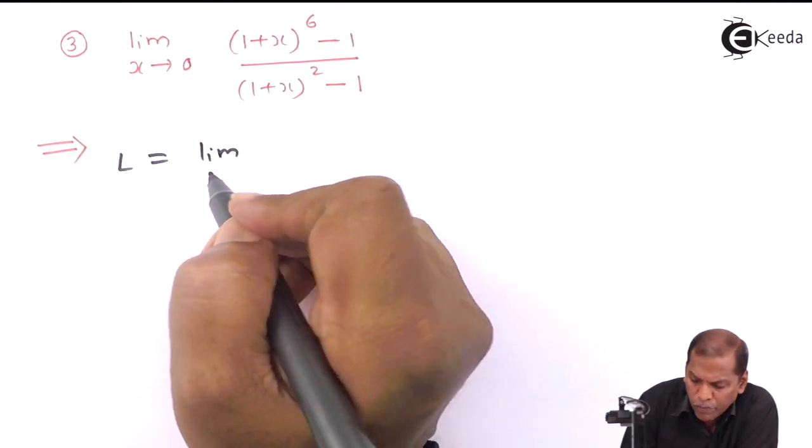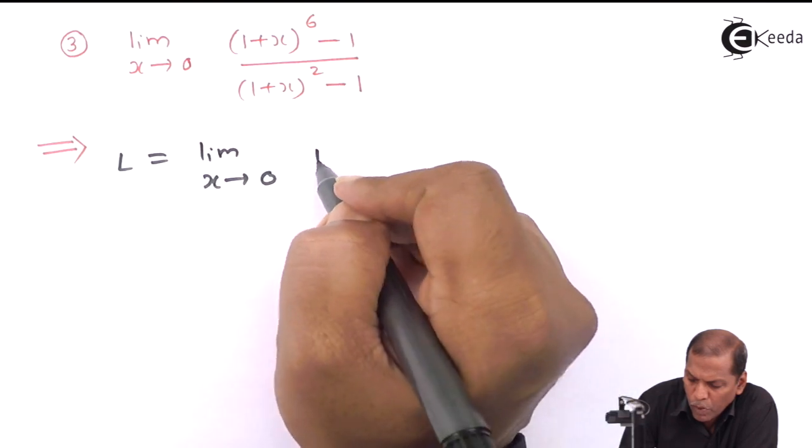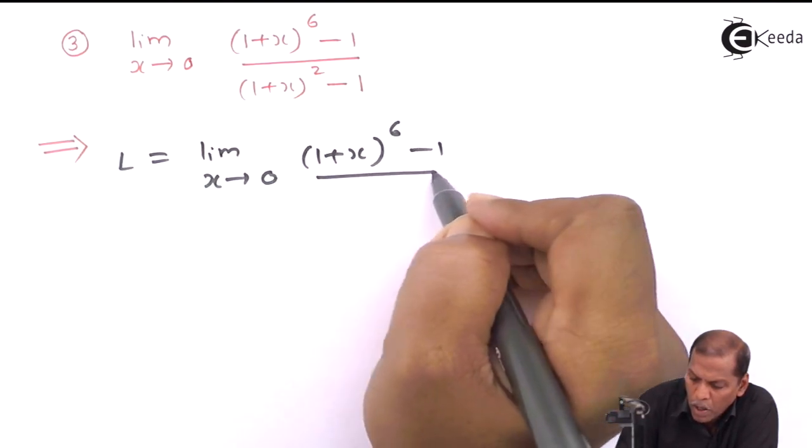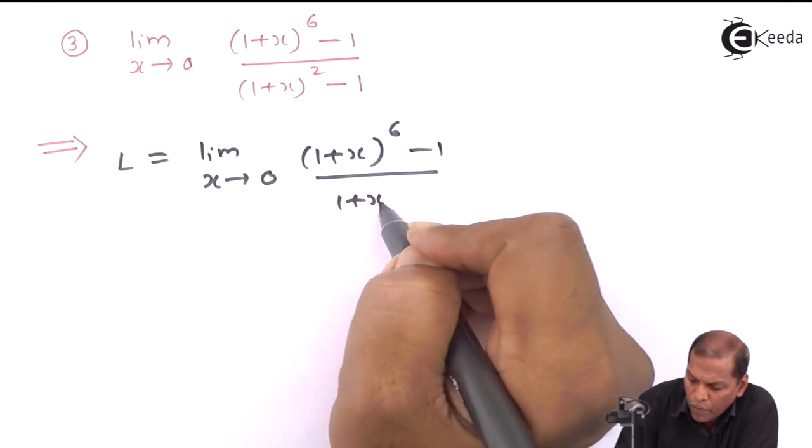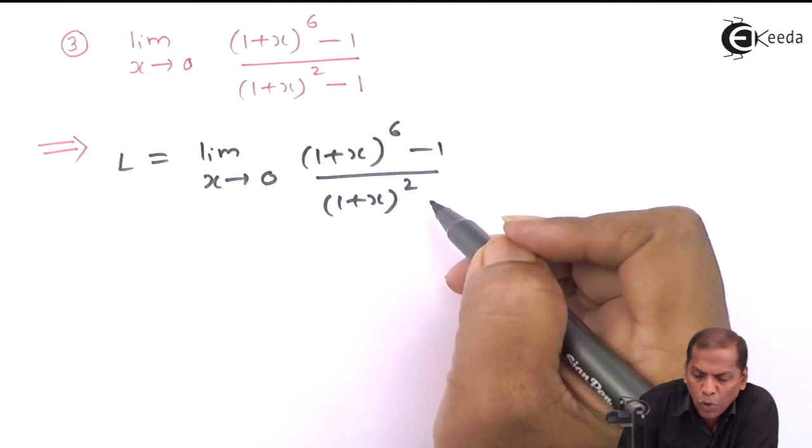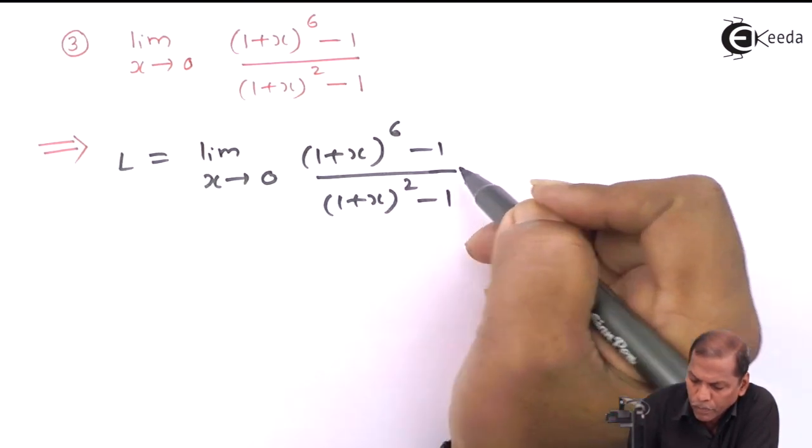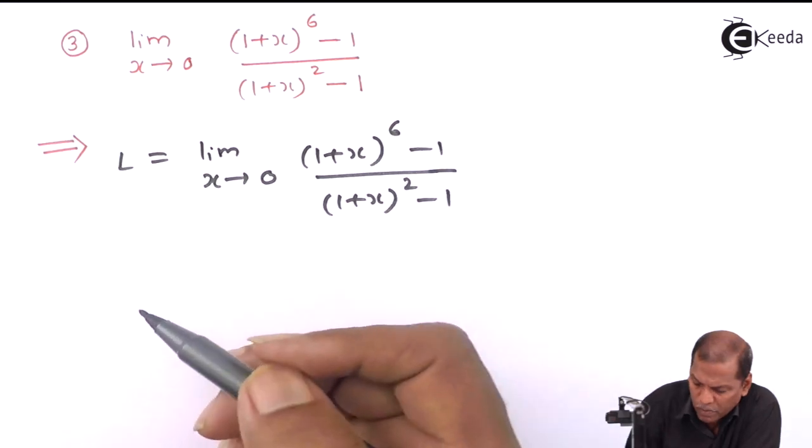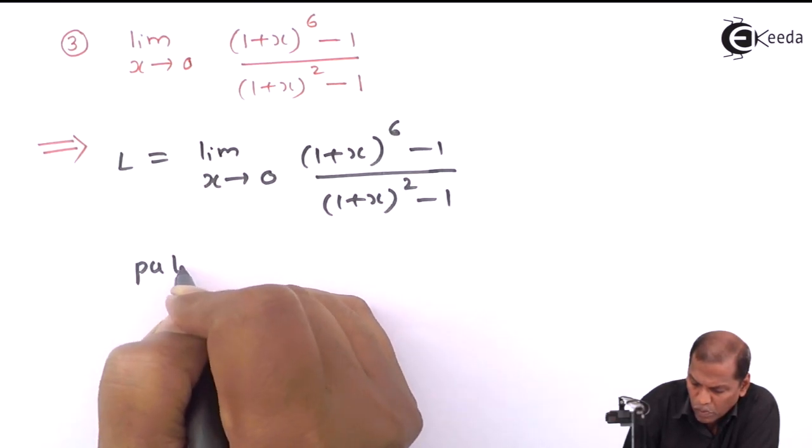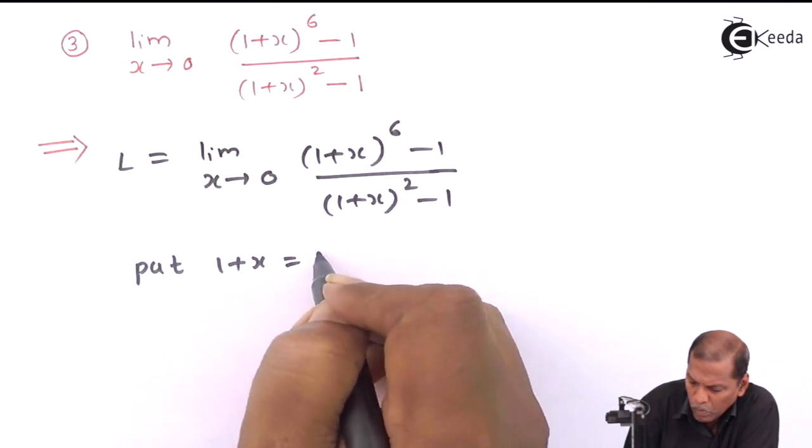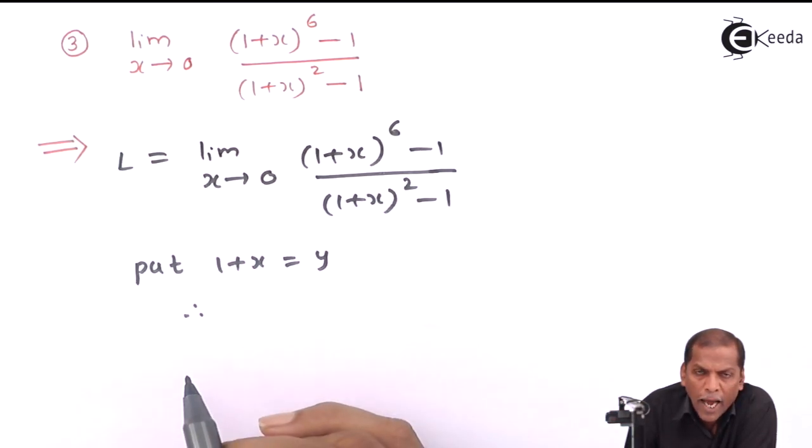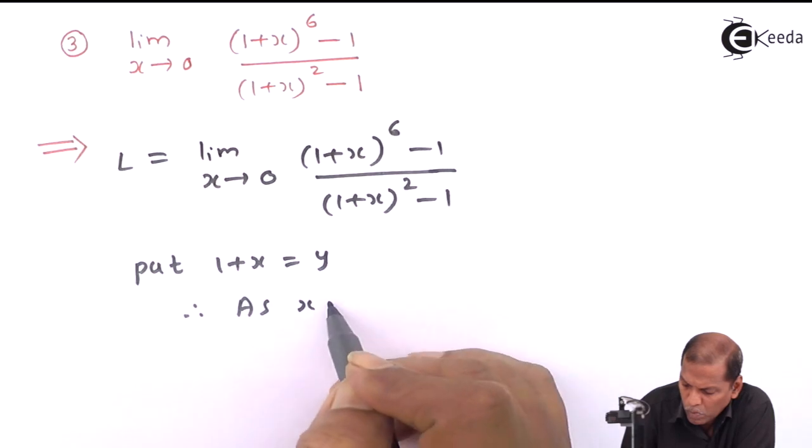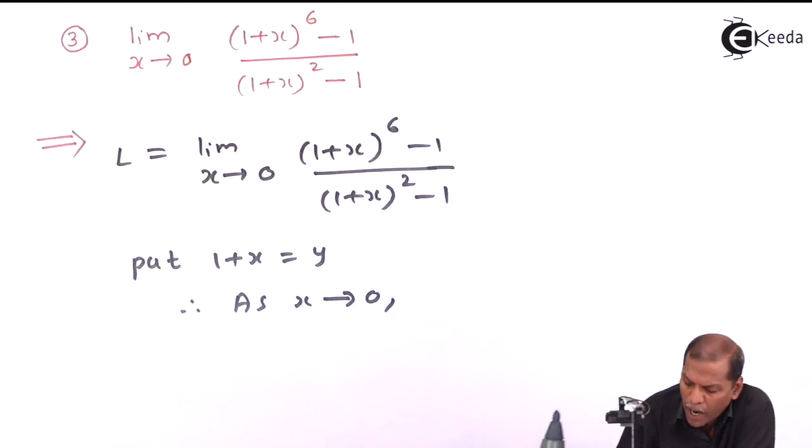So L equals limit as x tends to 0 of (1+x)^6 - 1 over (1+x)^2 - 1. Now here we put 1+x as y. Therefore, as x tends to 0, y tends to 1.